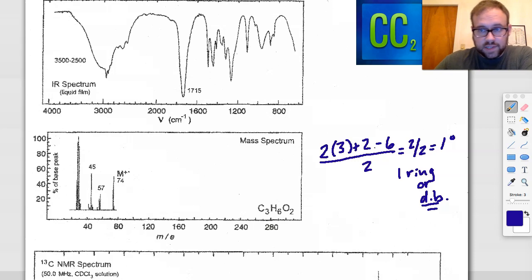For the mass spec, the M+ peak here is at 74, so we know that the mass of this structure is 74 grams per mole. If we take a look, there's two other important or prominent peaks. One of those is at 45. If you look in the guide, a peak at 45 is usually going to signify a carboxylic acid group, so a C=O-OH, that's a common fragment.